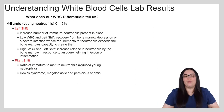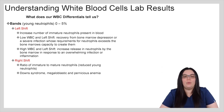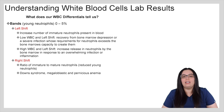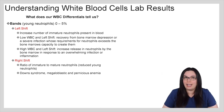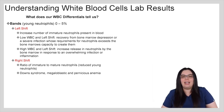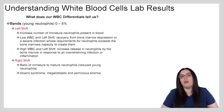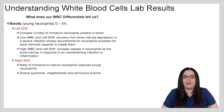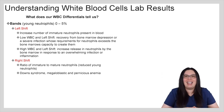Let's further break down bands, which are our young neutrophils. A left shift where bands are greater than 8% means there is an increased number of immature neutrophils present in the blood. A low white blood cell count with a left shift usually indicates recovery from bone marrow depression or a severe infection whose requirements for neutrophils exceeds the bone marrow's capacity to create them. A high white blood cell count with a left shift indicates an increased release of neutrophils by the bone marrow in response to an overwhelming infection or inflammation. We can also have a right shift — less common — which is a reduced ratio of young neutrophils. Patients with Down syndrome, megaloblastic anemia, or pernicious anemia may show right shifts in band formation.